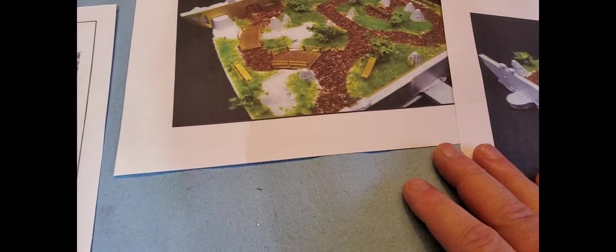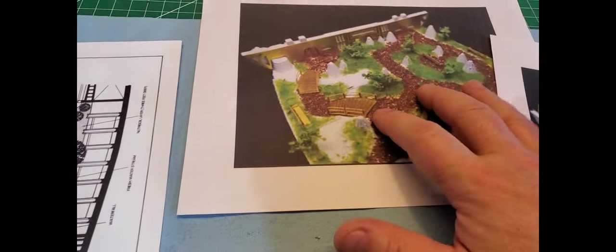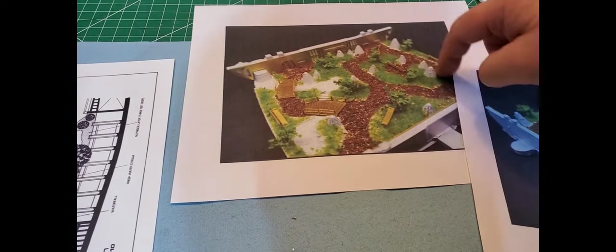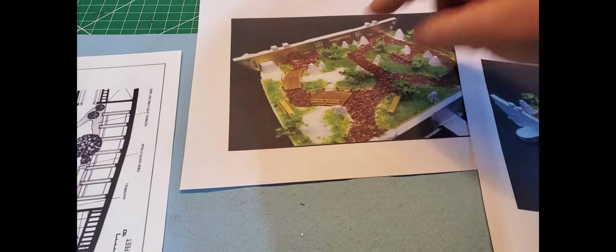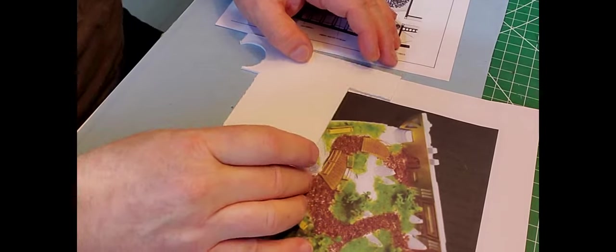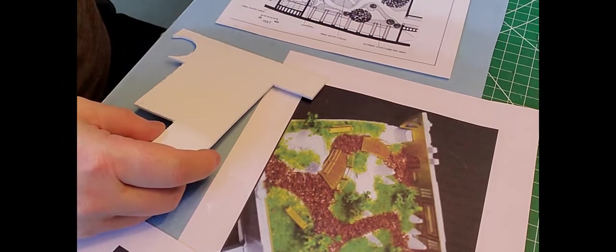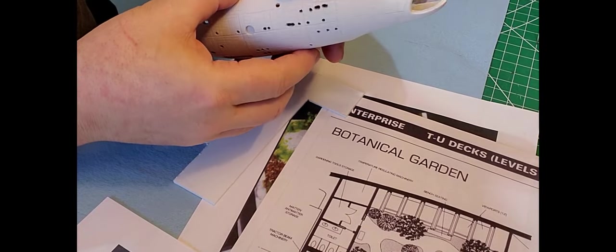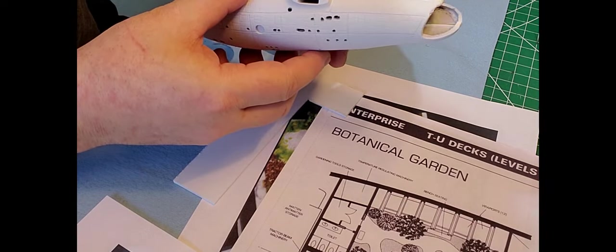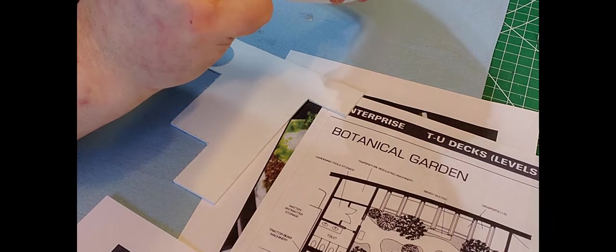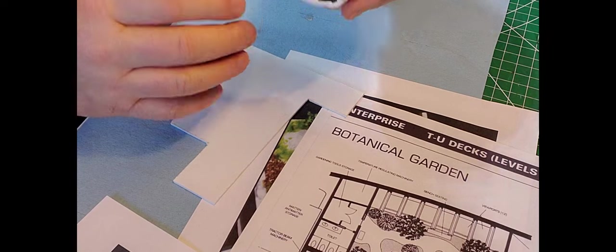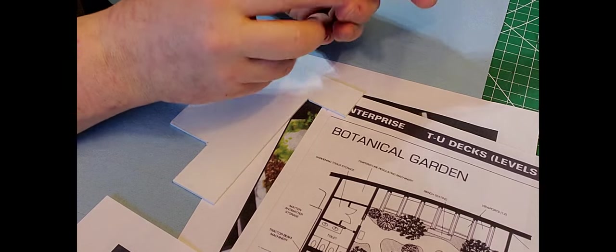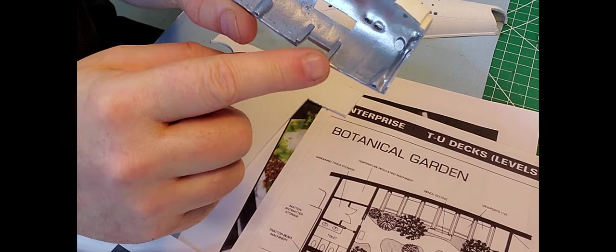So I'm going to get some two mil plastic sheet. I'm going to use that for the base and the walls. Then I'm going to trace out the walk paths and the areas where the water, the pond is. So let's do that. Okay. So I got the two mil sheet here.